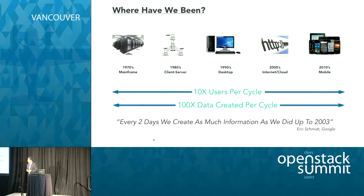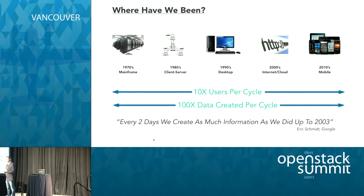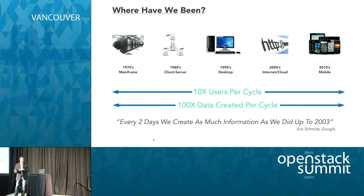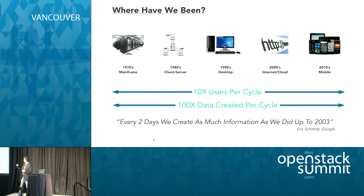For me it's interesting to realize where we've been. The notion that we've only been in this about 50 years is a lot lost on the community at large, in terms of how far we've actually come. In the 1970s we had mainframes — you had to go into a special building. We went into client-server. I'm older, so I remember all these trends. And we moved from the desktop to the big megatrends: internet and cloud, and then mobile. What's interesting is that we have 10 times the number of users every cycle, and even more importantly, 100 times the data being generated.